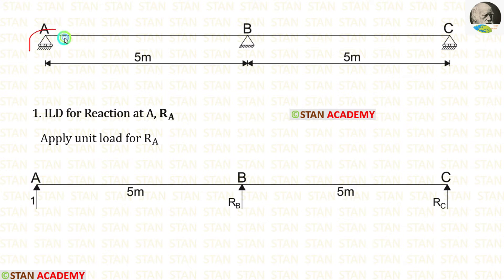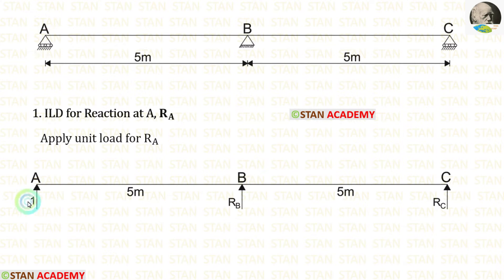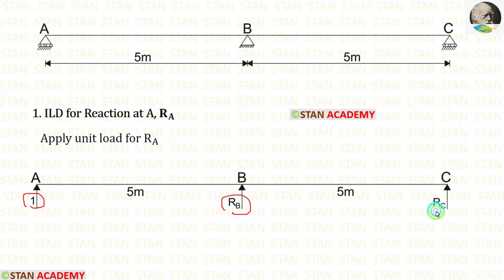At point A, we are having a roller support. Let us remove the roller support and apply a unit load. So RA is equal to 1. We have to calculate RB and RC.